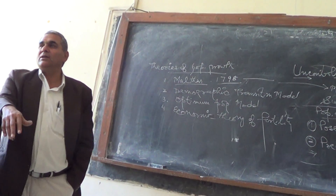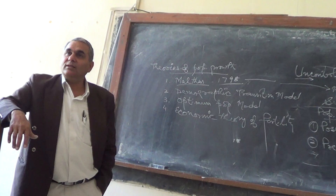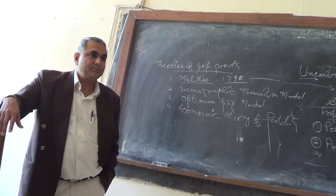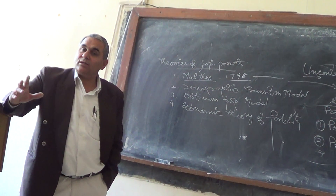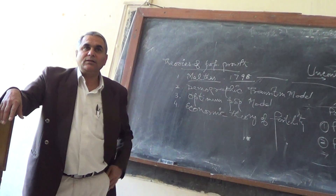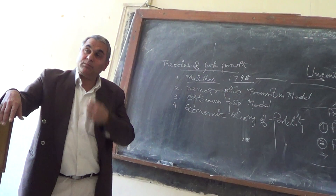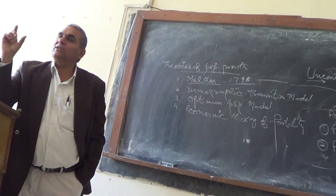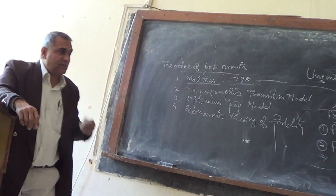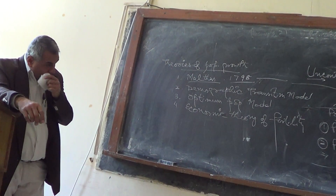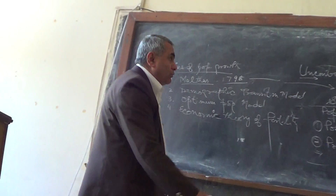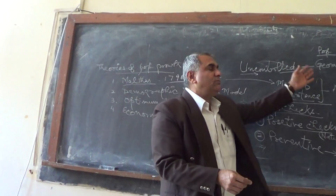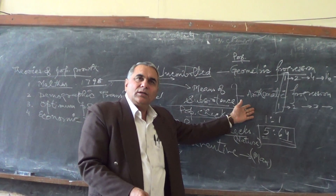The second type is preventive checks — where man controls population himself. Man could delay marriage, practice late marriage, and reduce the probability of having children. These were basically preventive checks, where man could control population.